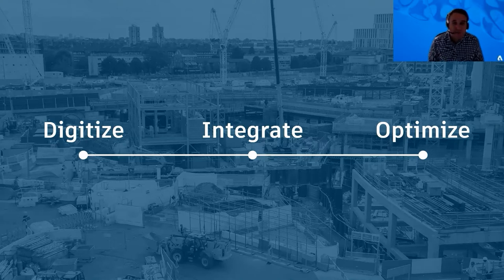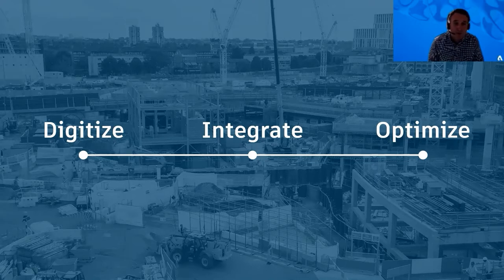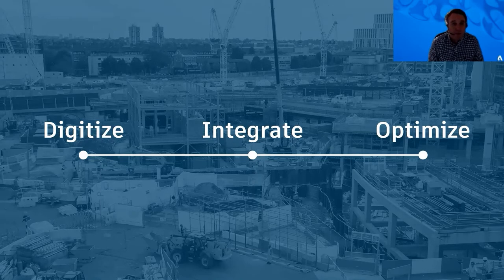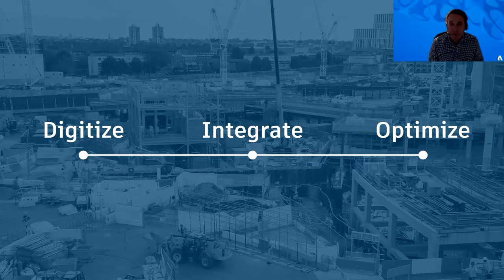Digitization is the first step. Once we've done that, we look at how we can integrate with your existing business solutions. We understand we can't provide a solution for every possible business application, so we integrate through API connections and also with business processes and data flows. Then we look to optimize the way we're working — using AI and machine learning to provide insight into what's actually going on at a project and organization-wide level.